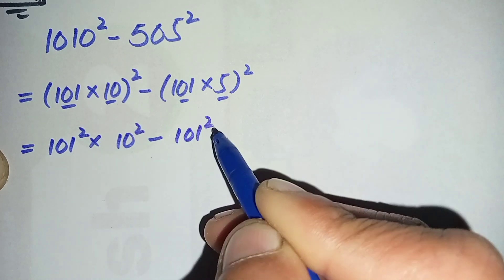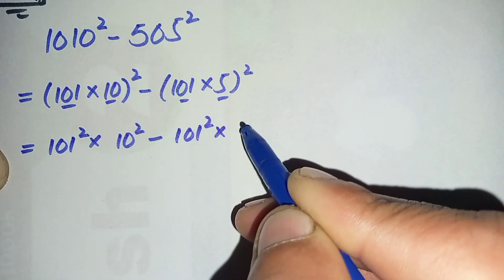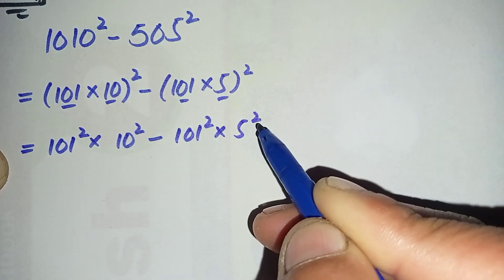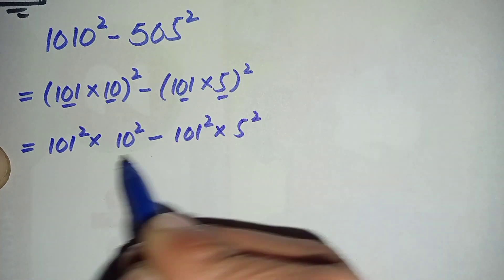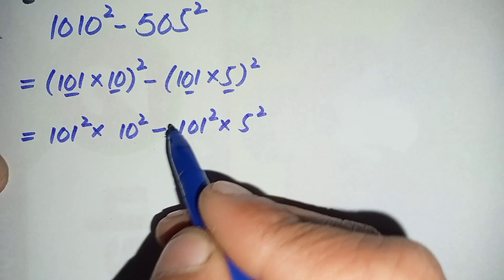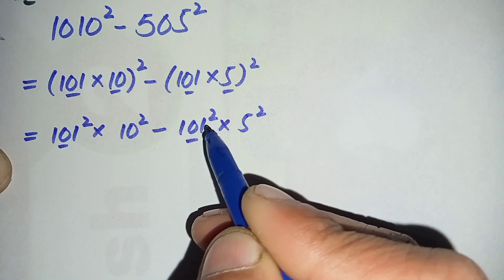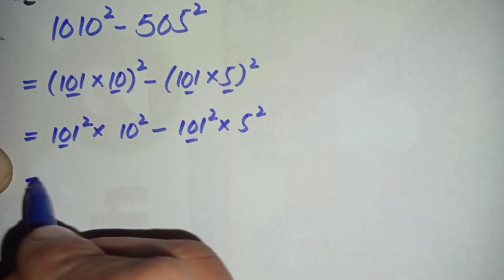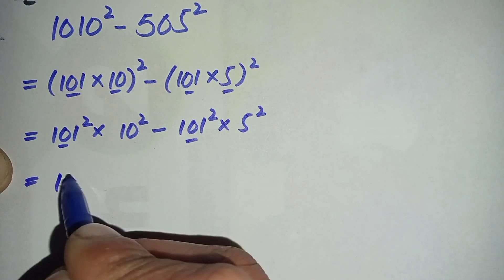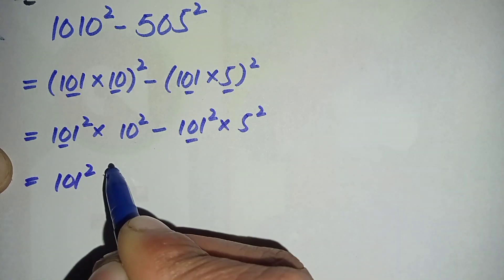Now my idea is: look at both terms. In both the terms 101² is common, so let us take out 101² common from both the terms. It will become 101² times, here 10² is left minus 5² is left.